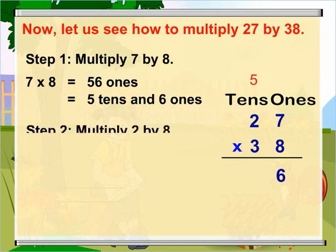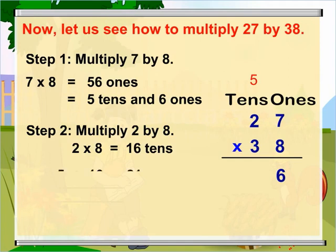Now, multiply 2 tens by 8 to get 16 tens. Add the 5 tens that you carried over to 16 tens. That is, 5 plus 16 equal to 21.